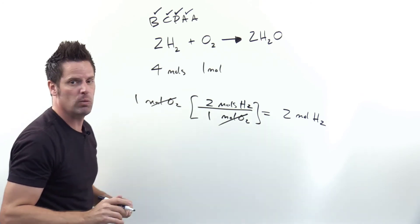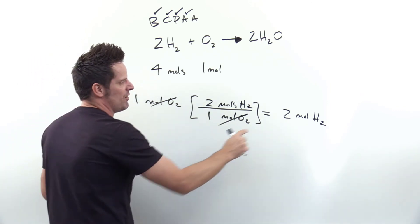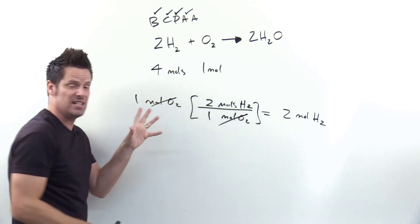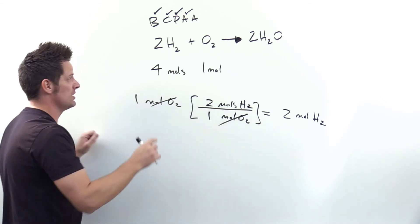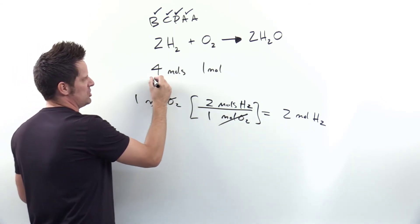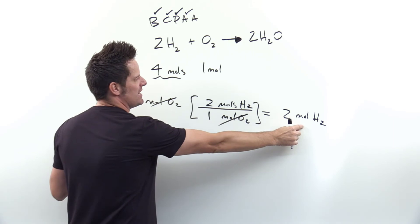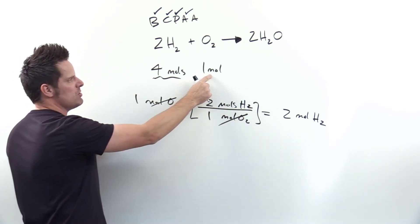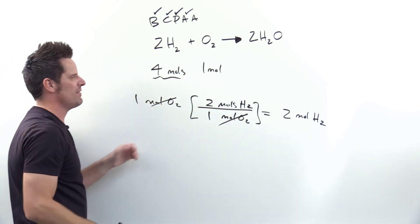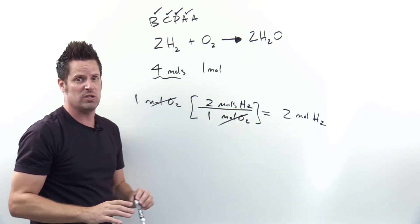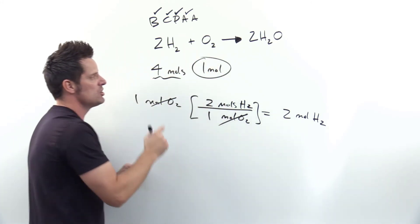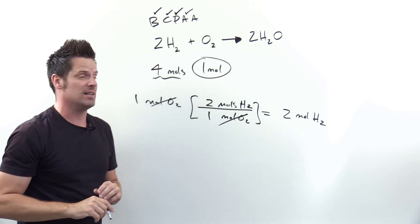Now we go to the second A in BICPA, which is, do I have at least that many moles of H2 in this scenario? The answer is yes. It tells me that I have 4 moles of H2, so I only need 2 moles of H2 in order to react with my 1 mole of O2, and I've got extra H2, I've got 4 moles of H2, which means what? It means that O2 runs out first, so O2 is the limiting reactant.